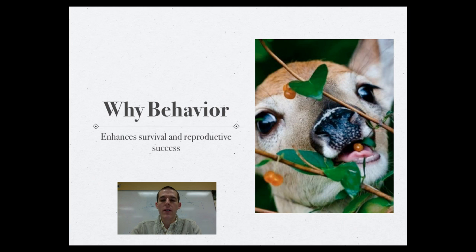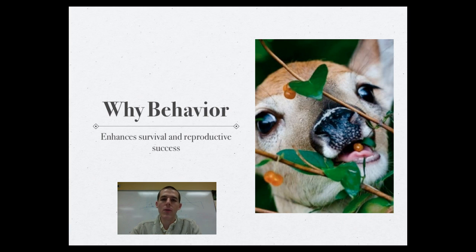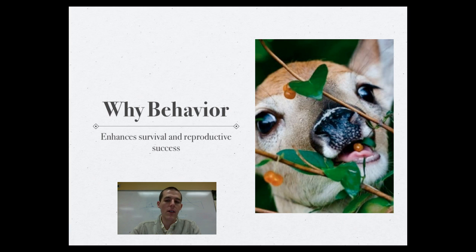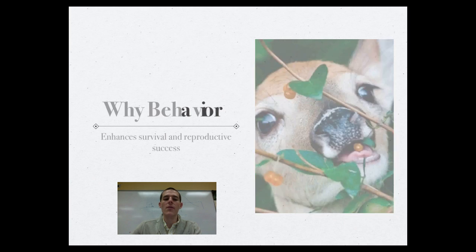The first thing I want to talk about is why behavior — why do animals have these behaviors that we've been talking about for the last couple of videos? The biggest theory about why animals have certain behaviors is all about survival, whether it is getting food, defending territory, or getting a mate. All behaviors somehow seem to enhance the survival and reproductive success of the individual. Now let's start talking about how natural selection influences some specific behaviors.